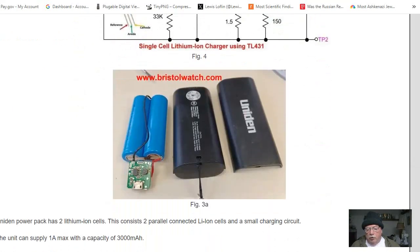This little Unidin unit consists of a charging board where you plug it into 5 volts from a wall wart, and it has two 18650 lithium ion cells in parallel.